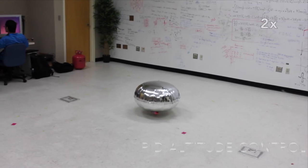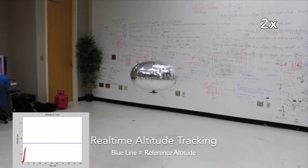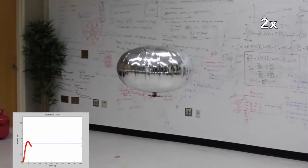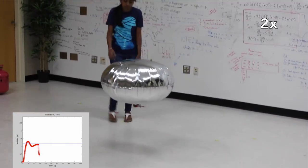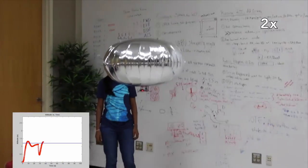Similar to yaw identification, a model was developed to control the altitude of the blimp as well. The PID gains were calculated using the PID tuner in MATLAB. In this demo, we see the blimp quickly respond to an external disturbance and stabilize to maintain the desired altitude.